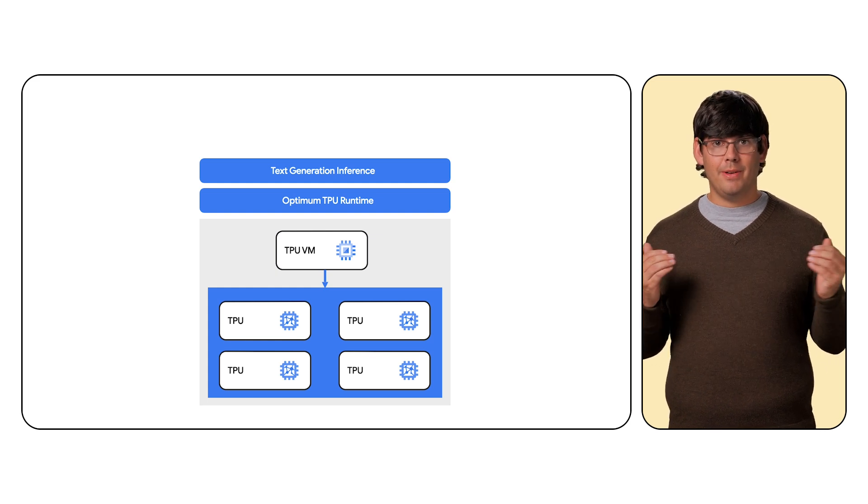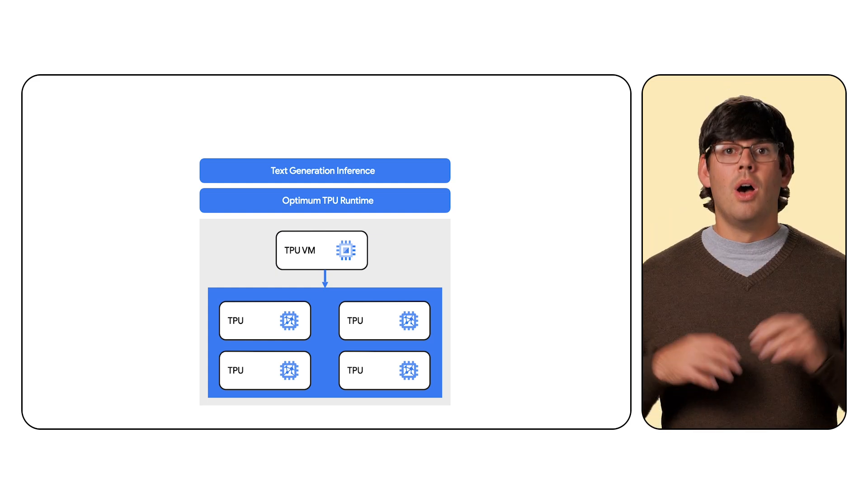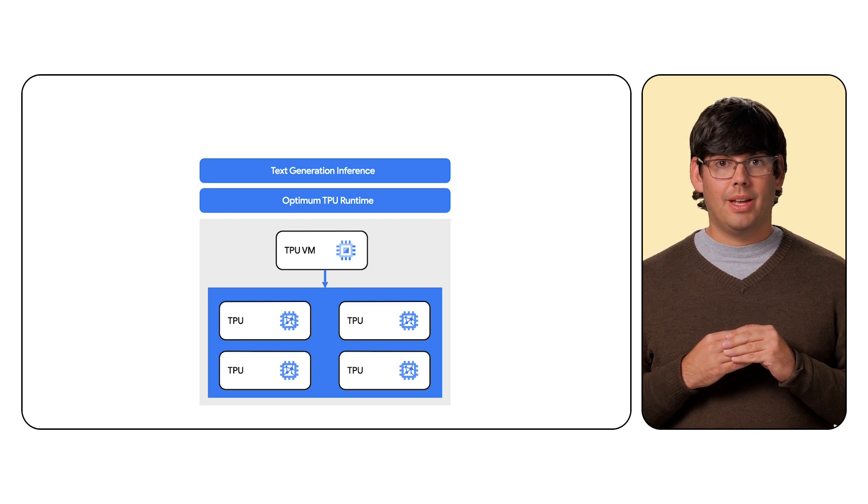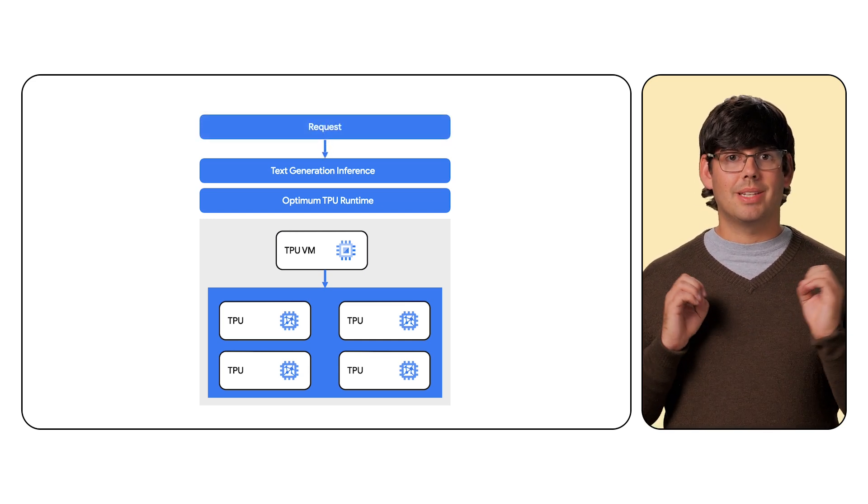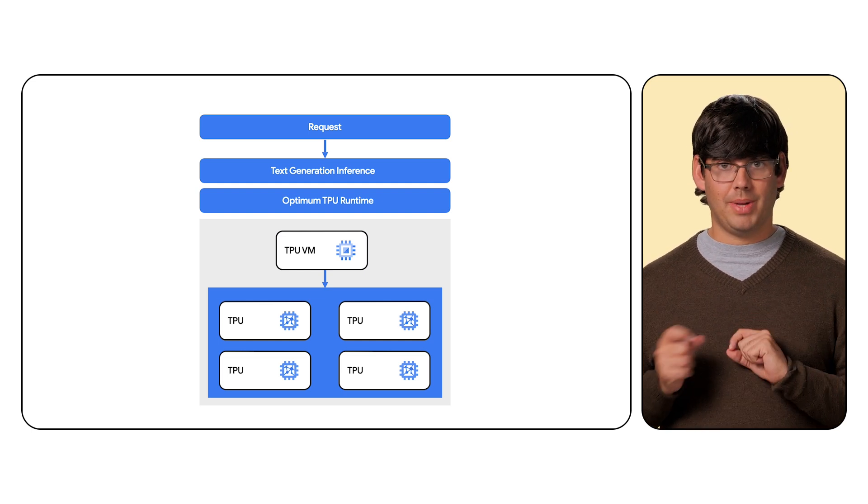Depending on the Cloud TPU VM you choose, you can choose from either model. Once the server is up and running, we can test it out on our local command line by sending a request to the Text Generation Inference API using the curl command.